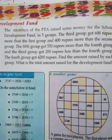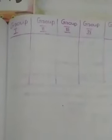My dear children, this question is quite difficult to understand. So read these questions 3 or 4 times. Only after that, listen to the answer part. First, we can make a table like this with Group 1, Group 2, Group 3, Group 4 and Group 5. Then look at the question once again. There are 5 groups.